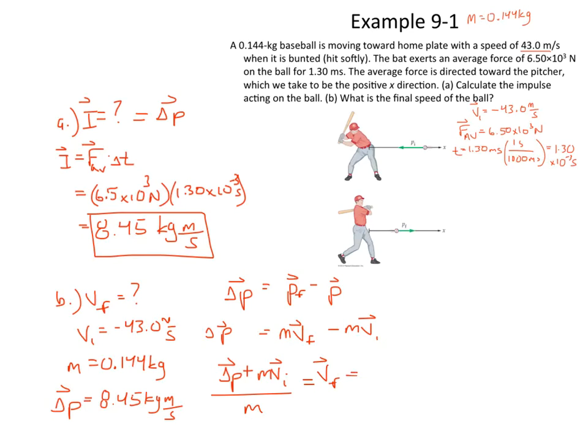So we have this written for final velocity right here. Let's just plug everything in. Change in momentum is 8.45, I'm going to leave the units out for the sake of space, plus mass, which is 0.144 kilograms times the initial velocity, which is -43.0 meters per second. You notice we have, this is a change, this is an initial momentum that's going to be negative, right? The ball is going this way, in the negative direction. Divided by now the mass of the ball, 0.144 kilograms.